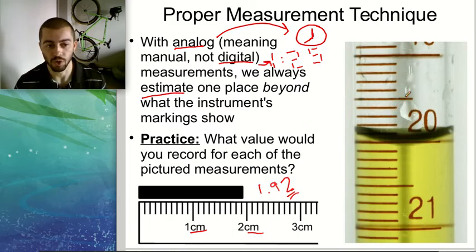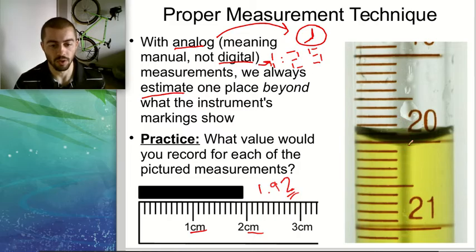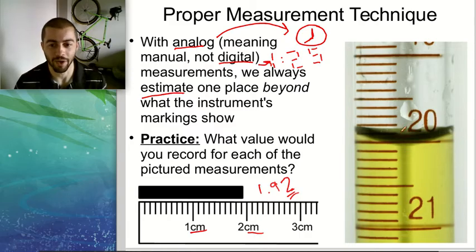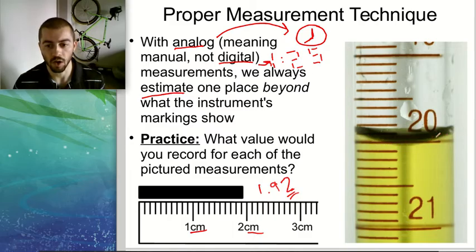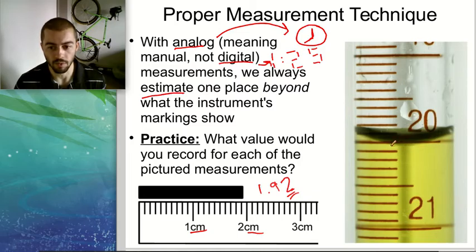Look at the burette here on the right side of the screen and try to decide what the proper measurement would be to record for this volume of liquid. Pause the video and come up with a measurement. With burettes or graduated cylinders, it's important to remember that we have to measure from the bottom of the meniscus. The meniscus is this curved part of the liquid, where the liquid sticks a bit to the sides of the container and we end up with this little curvature.